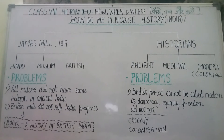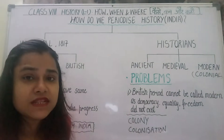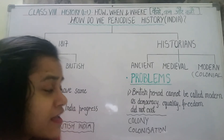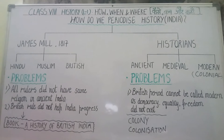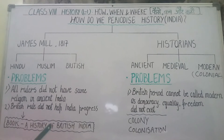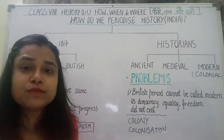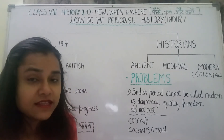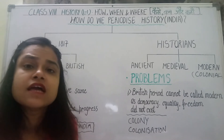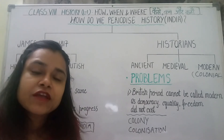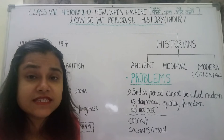Inhone Indian history ko religion ke basis par divide kiya. Magar yeh jo classification thi, yeh acceptable nahi hai aaj. Kyon ki is classification mein kuch problems hain. Sabse pehli cheez toh yeh ki inhone history ko religion ke base par divide kiya. But the problem is, all rulers did not have the same religion in ancient India. Kya hum yeh keh sakte hain ki jab Muslim rulers rule kar rahe the, us waqt Hindu raja exist nahi karte the? Jab British rulers ne rule kiya toh Hindu aur Muslim raja nahi the? And what about Maratha rulers, Sikh rulers, aur bhi rulers hote hain jo doosra religion follow karte hain — toh unki toh yahan koi baat hi nahi hai. Is liye yeh classification acceptable nahi hai.